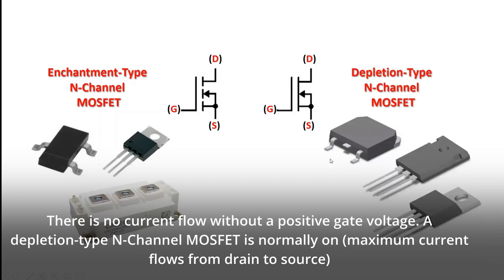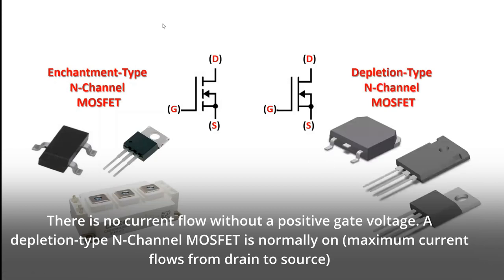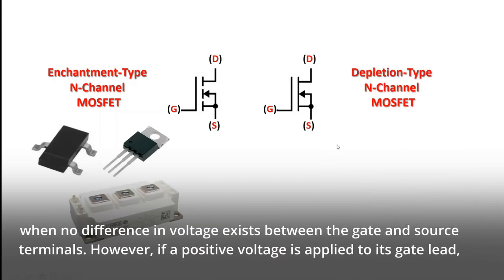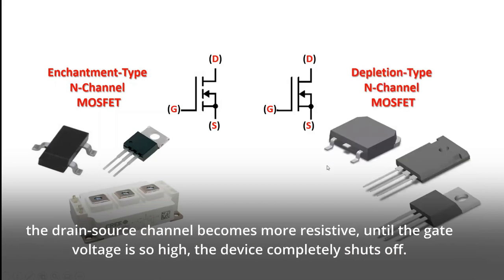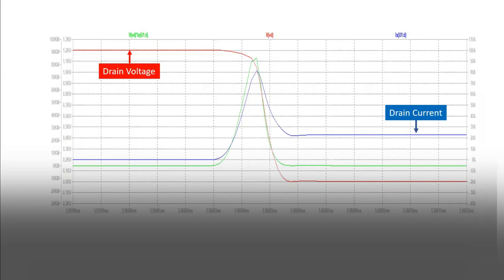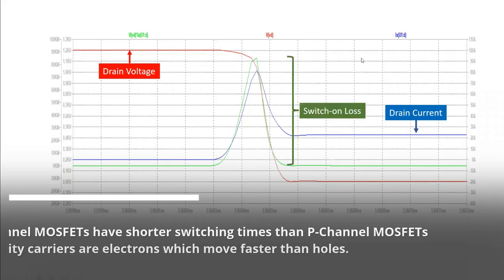A depletion-type N-channel MOSFET is normally on; maximum current flows from drain to source when no difference in voltage exists between the gate and source terminals. However, if a positive voltage is applied to its gate lead, the drain-source channel becomes more resistive until the gate voltage is so high the device completely shuts off. The switching times of the MOSFET device are very short, being in the range of a few tens of nanoseconds to a few hundred nanoseconds depending on the device type.